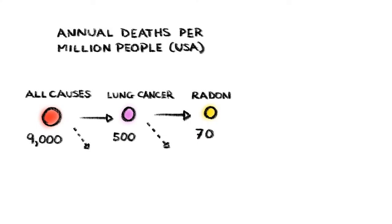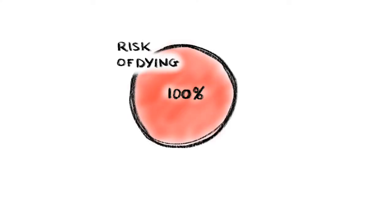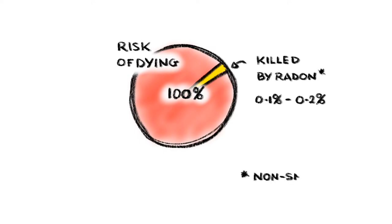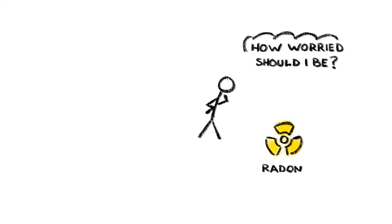But when you only consider people who don't smoke, only 10 people out of every million die from radon exposure. Another way of looking at this is to ask what the chances are that when you die, radon was the cause. And here it turns out that when you pop your clogs, there's around about a 1 to 2 in 1,000 chance that radon will be to blame.